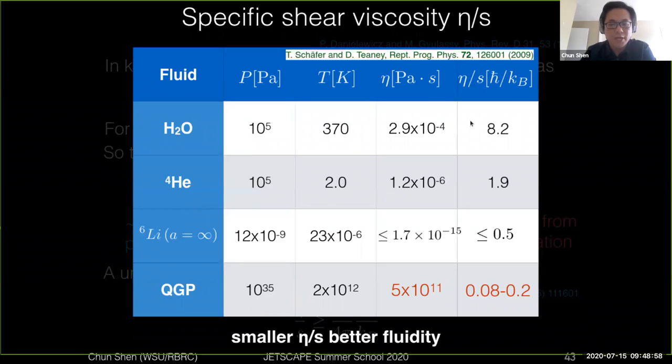So we can look at this ratio for a few types of normal fluids. For water around its boiling point, the ratio of eta over s is about 8.2. We know that water is already a very good fluid, so the value of eta over s is actually on the order of 10. If we go to liquid helium, the value of eta over s actually reduces to about 2.